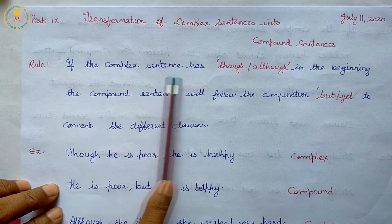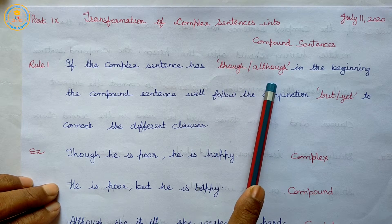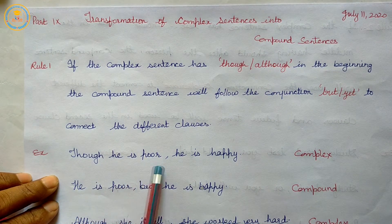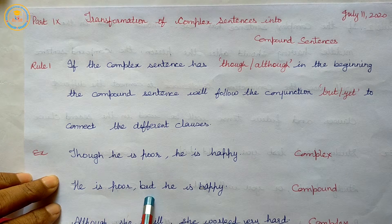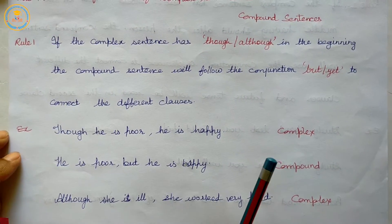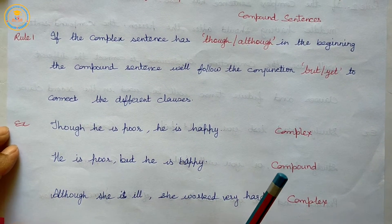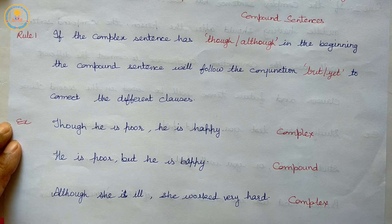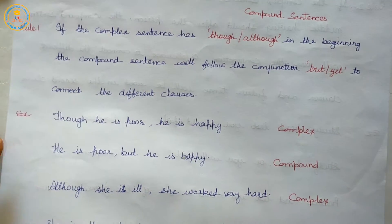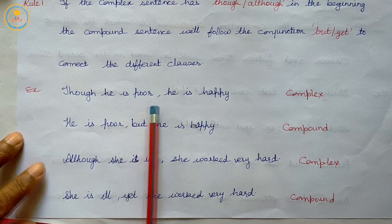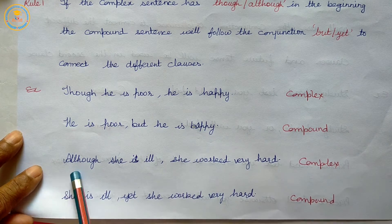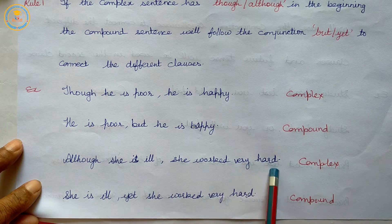Rule one: if the complex sentence has 'though' or 'although' in the beginning, the compound sentence will use the conjunction 'but' or 'yet' to connect the different clauses. For example: 'Though he is poor, he is happy' becomes 'He is poor but he is happy.'